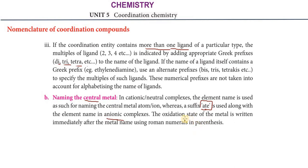The oxidation state of the metal is indicated using Roman numerals in parentheses after the name of the central metal atom. This is the nomenclature system for Coordination Compounds.